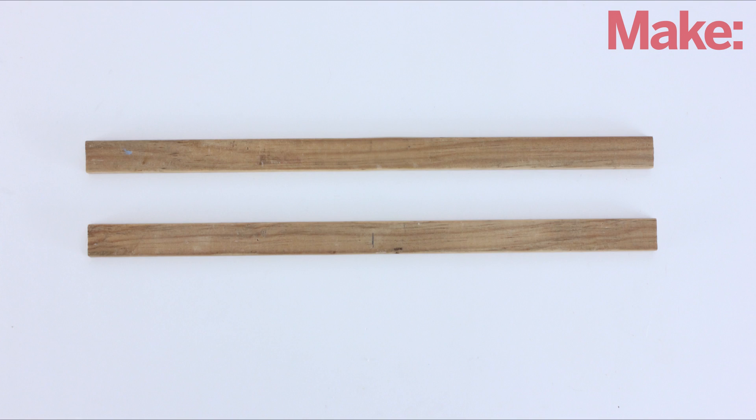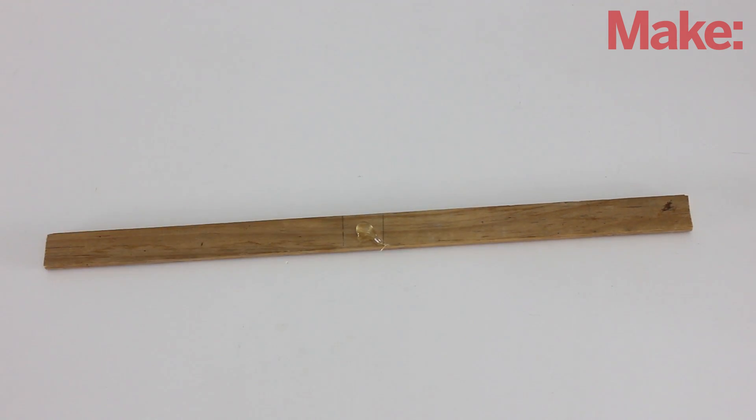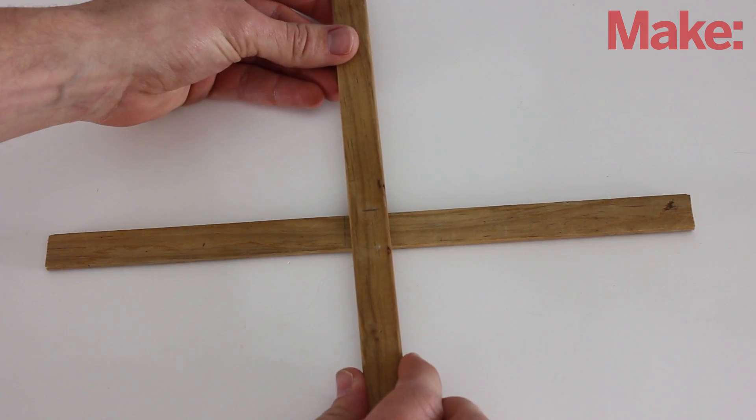Start by cutting two small pieces of wood that are each about a foot long. Apply a drop of hot glue to the center of one piece and then attach the second one to make an X.